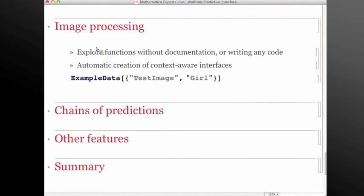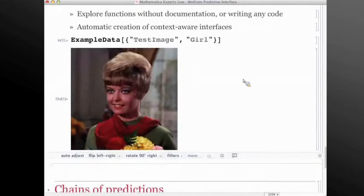Very powerful functions. But what if you just want to get something done, something simple? What are the other possibilities that you can rely on? The suggestions bar gives you, in this example, access to lots of image processing functions.